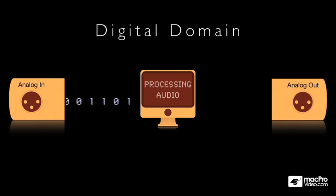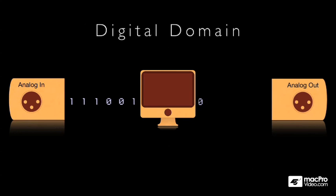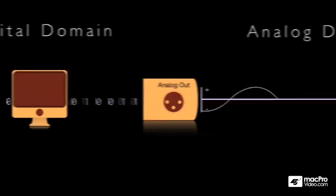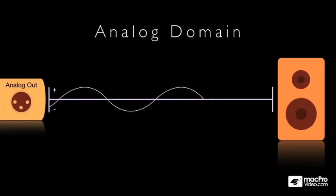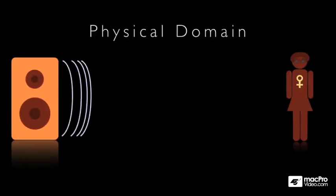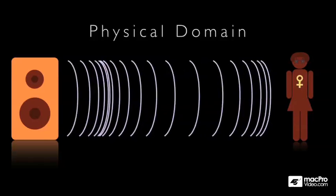But before the audio signal can be heard as sound again, it must make the return journey back to the physical domain. So once the processing is finished, our signal makes its way to the audio interface's output, where it passes once again into the analogue domain. And when it gets to the speaker, it passes back out to the physical domain, where it exists again as sound pressure waves, ready to be enjoyed by anyone who's listening.